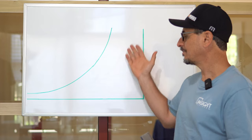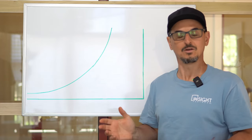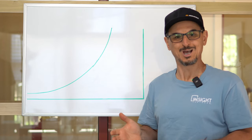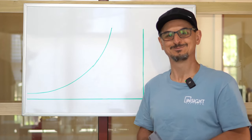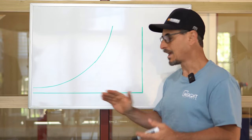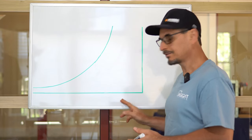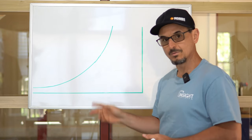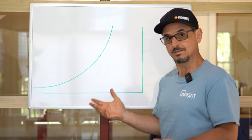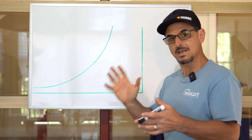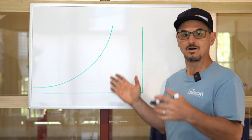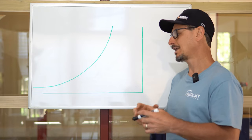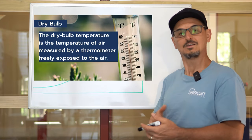I've drawn just the basic outline structure of the chart, and I'm going to go through these psychometric properties one at a time and show you how this works. If you were to take a psychometric chart and just look at the x-axis, the y-axis, and this curve here — which is called the 100% saturation line — you get a framework for the chart itself. All the other lines just fill this in. I like to start with dry bulb because that's easiest to understand.